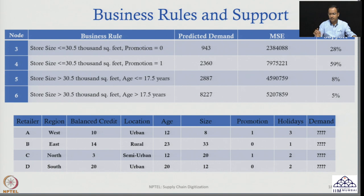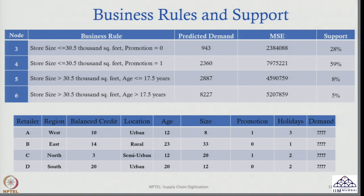Let us start with Retailer A, which is located in the West Region. Balanced credit is 10 lakh rupees and it is located in an urban area. Retailer A is 12 years old, the size of the store is 8,000 square feet, a promotional offer was given during that time period, and there were 3 holidays. Can I predict the order quantity — that is, the demand — from this retailer?